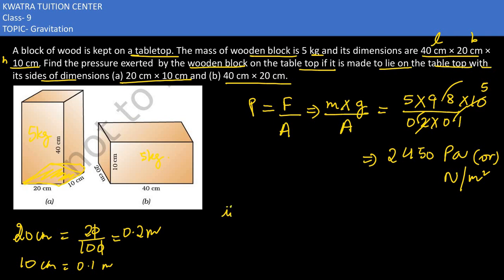In the second part they are saying the base has been changed and it has been kept at 40 and 20. What will be our area change? Thrust would be as it is, that is 5 into 9.8. Area in this case would be 40 into 20. But 40 and 20 we will convert in decimals. So it would become 0.4 and the other one would be 0.2.